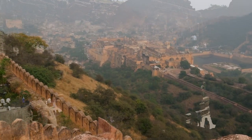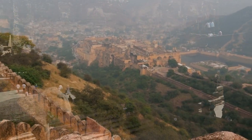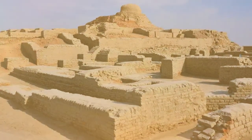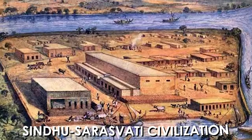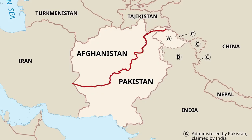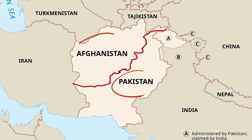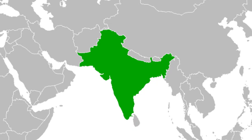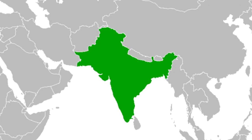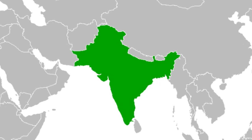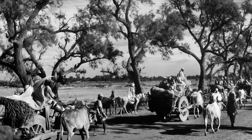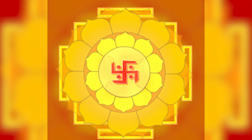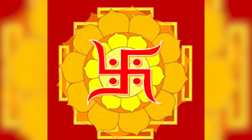Our story takes us back 5,000 years to the Indus Valley — the thriving Sindhu Saraswati civilization, which extended from modern-day northeast Afghanistan to Pakistan and northwest India, but was part of India before its partition. Amidst the bustling streets and vibrant bazaars, the Swastika began its remarkable journey.